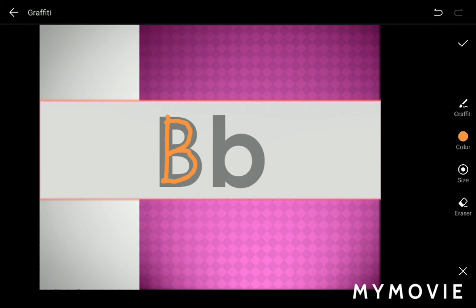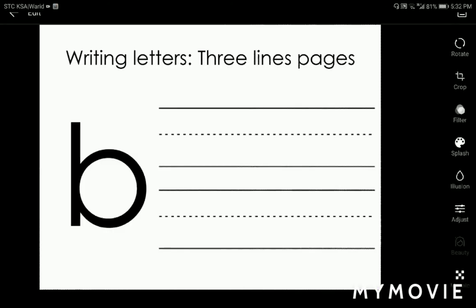Small letter b: first we draw a straight line downwards, then again downwards to upwards, and around to close the circle. This is letter B and the sound is 'buh buh'.